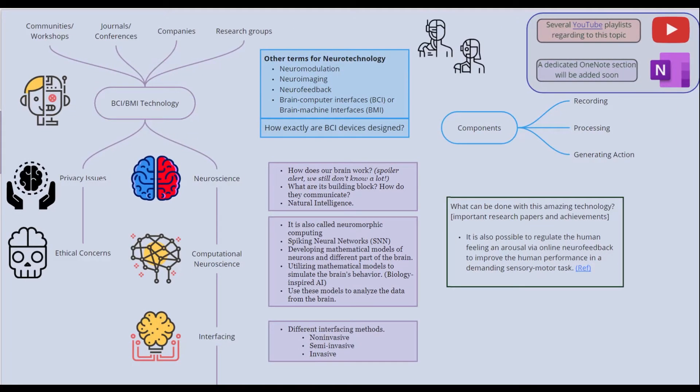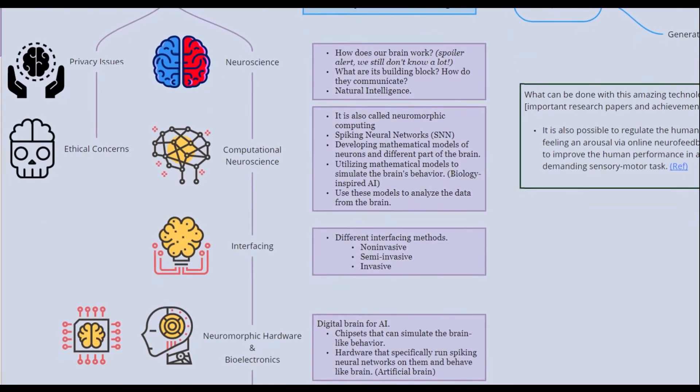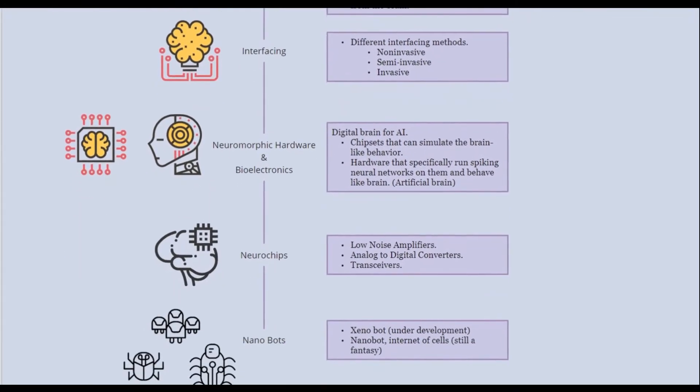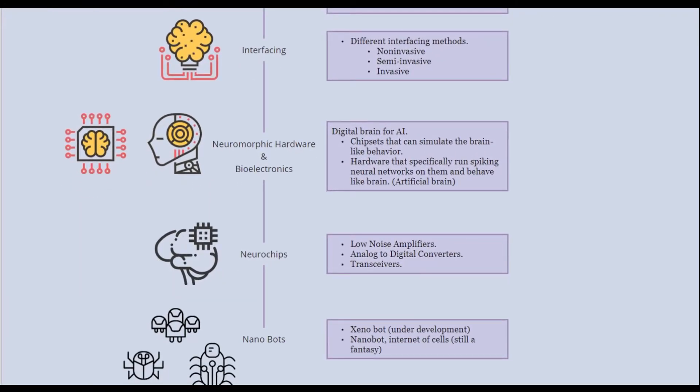One thing that I'm not looking at is the privacy issues and ethical concerns because they are so niche. But overall we should know about neuroscience, which is how the brain works, computational neuroscience, which is the models that are being made from the neuroscience, interfacing with the brain and the methods from that, and neuromorphic hardware and bioelectronics.